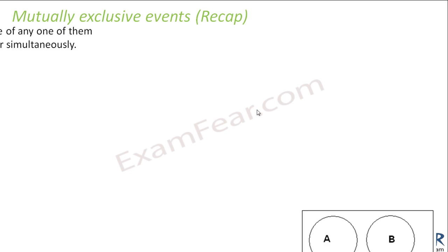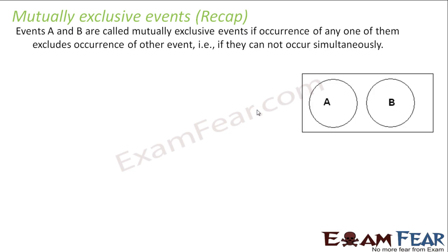We also know what is mutually exclusive events. Two events A and B are mutually exclusive if occurrence of one of them excludes the occurrence of another. That means if you draw a Venn diagram you will see that A and B are non-intersecting. They don't occur simultaneously.